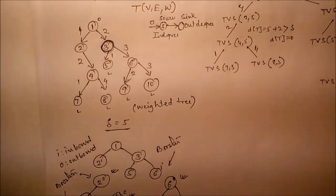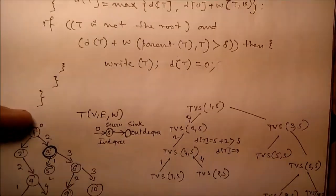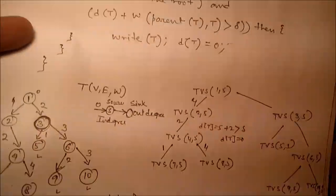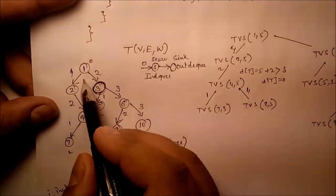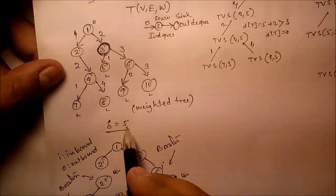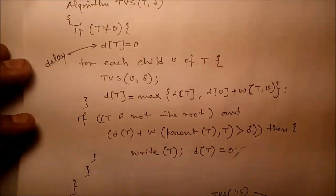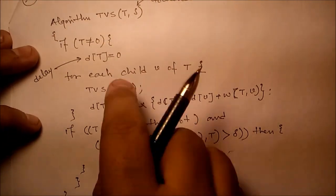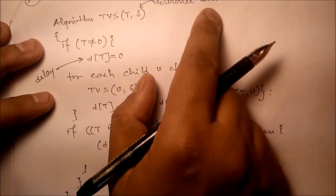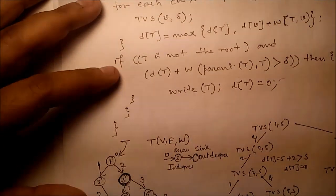Now let's see how the algorithm works. Our aim is to determine where to place the repeater in this particular tree. The transmission losses are: one, two, three, two, one, two, four, four, three, two, six. The tolerance level delta is five — if the path delay exceeds five, we need to place a repeater. This is the tree vertex splitting algorithm TVS(T, delta), where delta is the tolerance level and T is the root.